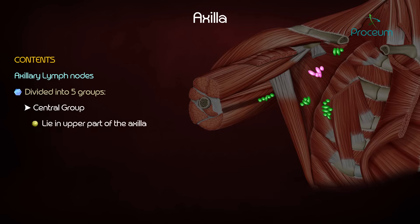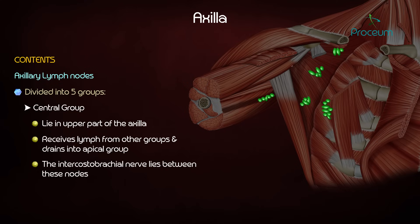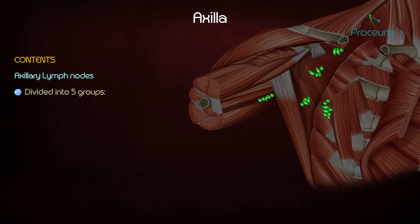The central group lies in the upper part of the axilla, receives lymph from other groups, and drains into the apical group. The intercostal brachial nerve lies between these nodes, hence enlargement of these nodes, as in cancer, can cause compression of the nerve and will result in pain along the inner border of the arm.